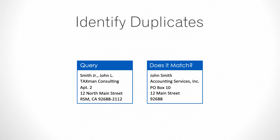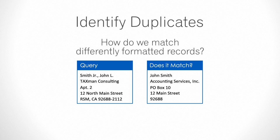Matchup is all about identifying duplicates. So how do you set the rules for determining whether two records match or not? For example, we have these two records. It's obvious that they have completely different formatting. So how do we match these differently formatted records?